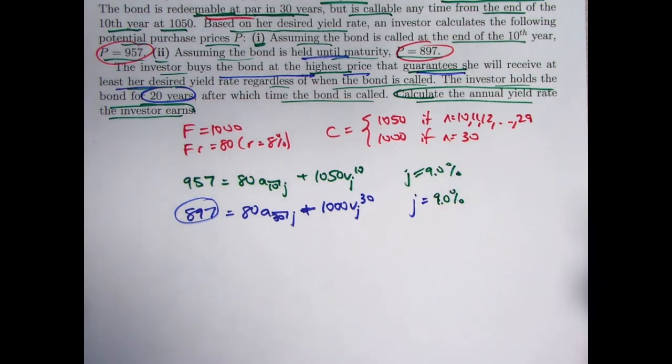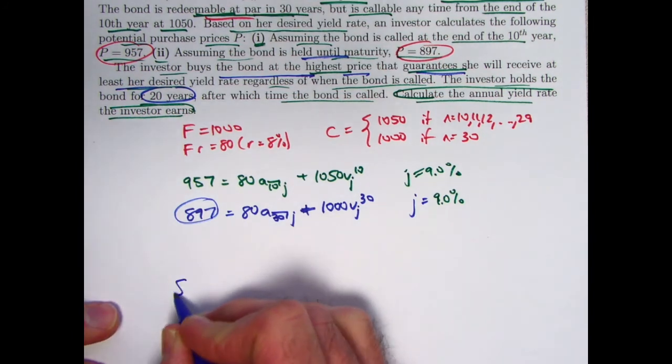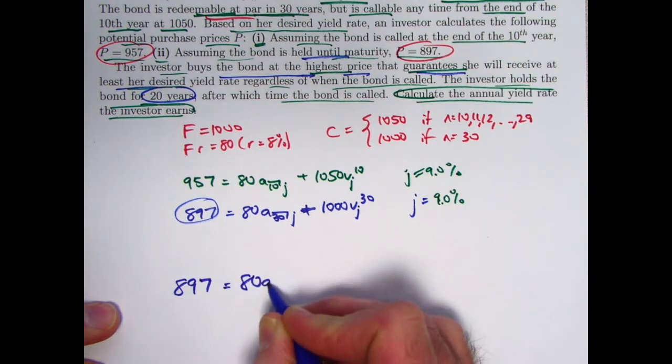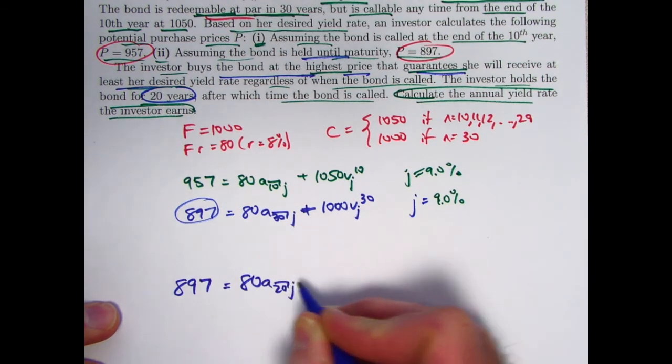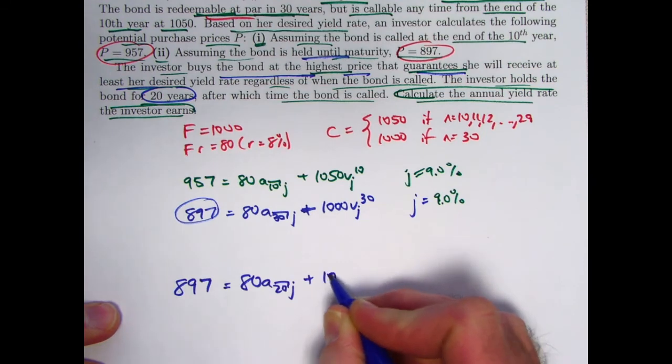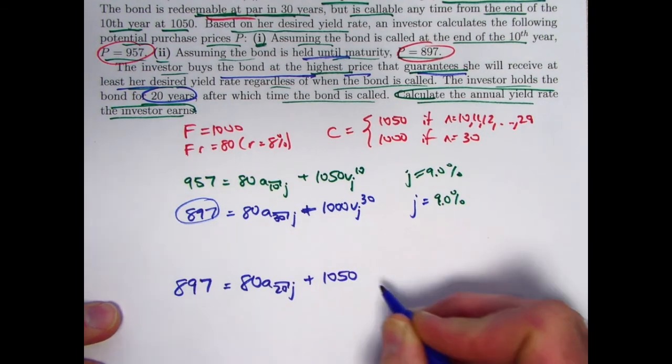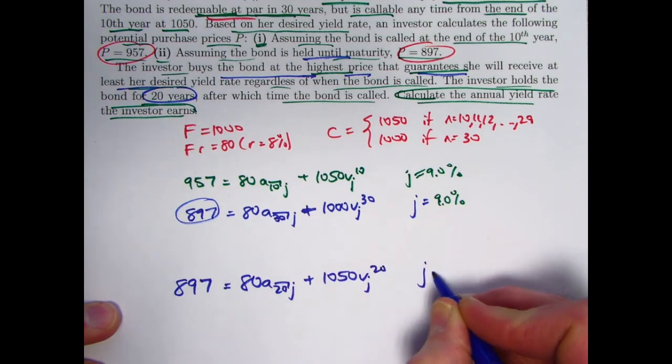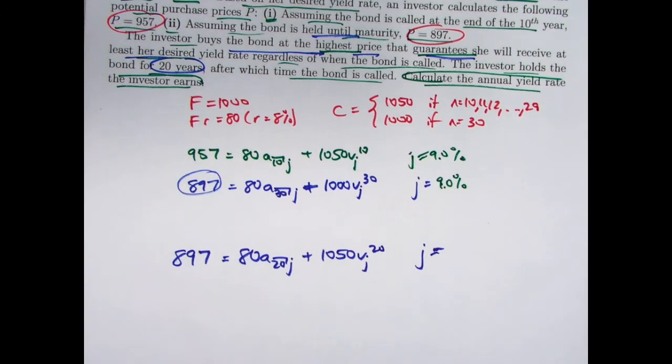That's the highest price that's going to guarantee a return of 9% no matter when the bond is called. If the bond is called some other time, the actual yield is going to be higher. What is the yield if the bond is called at time 20? Again, it's not necessary to write this kind of equation. But if it helps you think about it, and for one thing, be careful that the redemption amount is 1,050, and that N is 20, go ahead and do it.